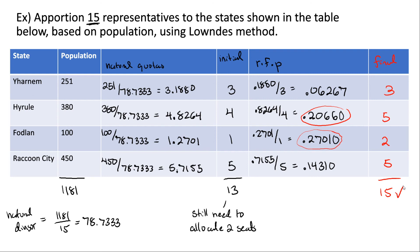Going back to the history part: Lowndes' method was proposed as a method that would help out small states or states with smaller populations. Looking at what happened here, the state with the smallest population — 100, compared to others with higher populations — ended up getting an extra seat because it had a larger relative fractional part. If we had done this using Hamilton's method, the two largest decimal parts would have been Hyrule and Raccoon City, and the smaller-population state would not have gotten an extra seat. So Hamilton's method generally favors states with larger populations, while Lowndes' method generally favors states with smaller populations — though it doesn't always happen that way.